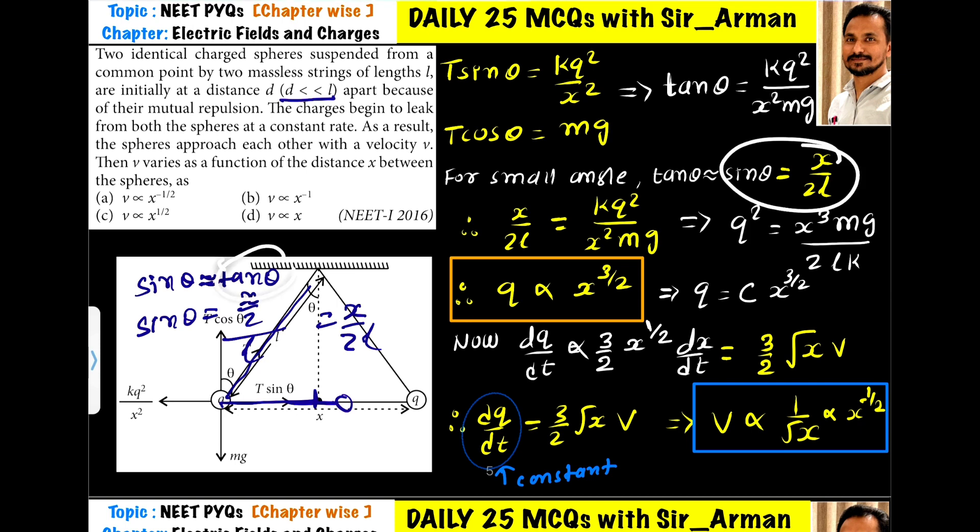We have two expressions: tan θ = x/2l and tan θ = kq²/(x²mg). We can equate them: x/2l = kq²/(x²mg). Making q² the subject, q² equals x³mg/2lk.